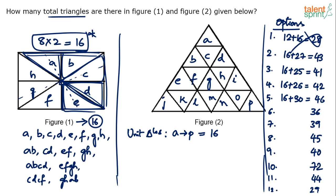Now go for combinations. Can you club two units to get a triangle? No — two triangles combined in this kind of figure will not give another triangle. They'll only give parallelograms, rhombuses, or quadrilaterals. So the number of triangles formed by two units is zero.